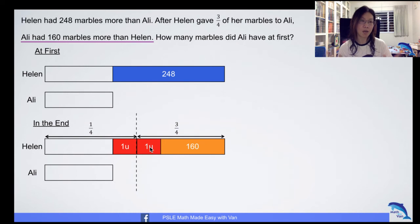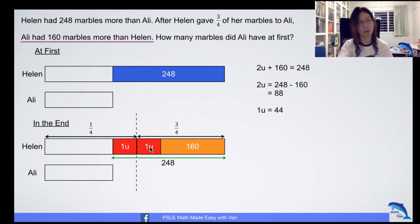That is why labeling your model is so important. Remember, if you want to make use of your model to help you solve the question, you must label it. And since I've labeled everything correctly, you will not go wrong even though you have not drawn it proportionally. Now we have to solve what is the value of one unit. As you can see from the model, your two units plus 160 is 248, and then one unit as you solve it, one unit is 44.